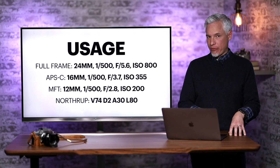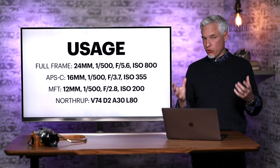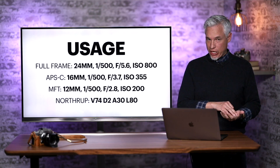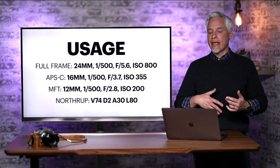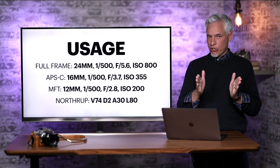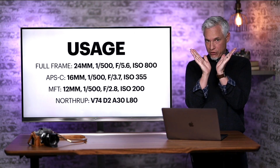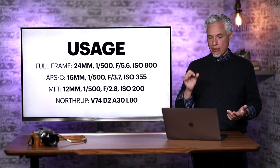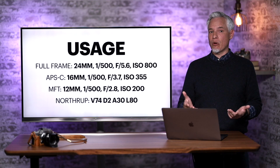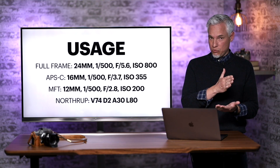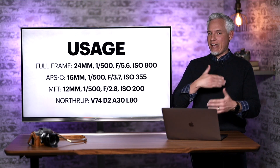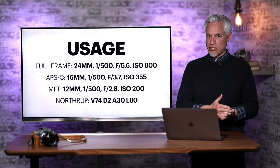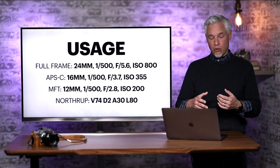Now let's look at real camera settings and talk about how we could use the new system to discuss the entire settings used to create a photo. My settings would be read as V74-D2-A30-L80. On a full-frame camera, you would read that as 24mm at 1/500th of a second, f5.6 and ISO 800. You can see my system is much more compact. V74 represents a wide-angle view of 74 degrees. D2 means 2 milliseconds, the same as 1/500th of a second, but without the fraction. A30 represents f5.6 without needing a decimal. L80 relates to ISO 800.